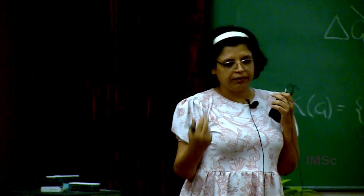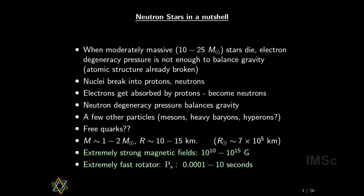Some people even use neutron stars to test alternative theories of gravity. Extreme density is one interesting property, but not the last. Neutron stars are also extremely strong magnets. Their magnetic fields can range from 10^10 to 10^15 Gauss — and for comparison, the fridge magnets we all use are around 50 or 60 Gauss. So you can understand how strong those magnetic fields are.